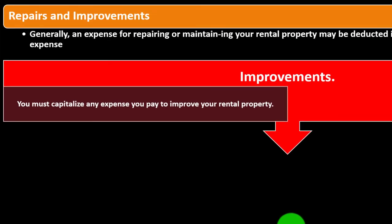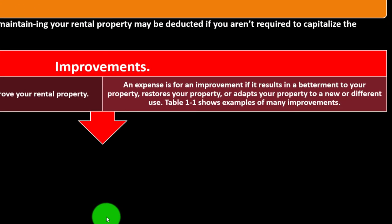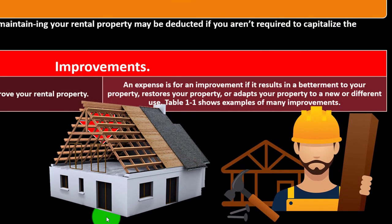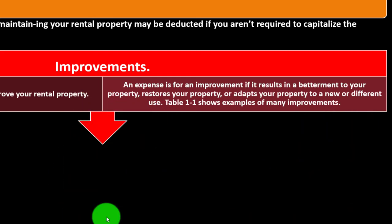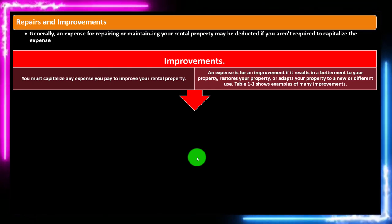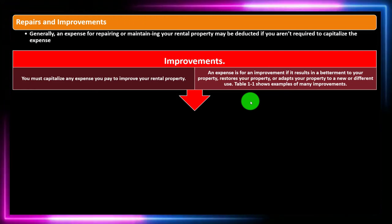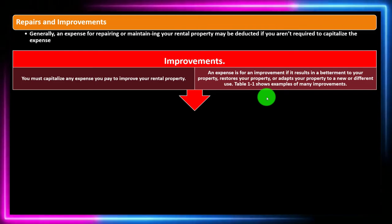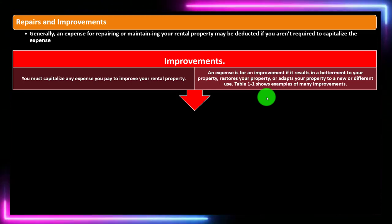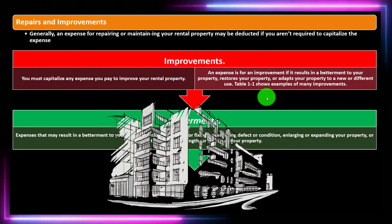You must capitalize any expense you pay to improve your rental property. An expense is for an improvement if it results in a betterment to your property, restores your property, or adapts your property to a new or different use. For betterment: if a hole in the roof is fixed, that's putting it back to normal use — a repair — but a whole new roof may be an improvement. Betterment expenses include fixing pre-existing defects or conditions, enlarging or expanding your property, or increasing the capacity, strength, or quality of your property.